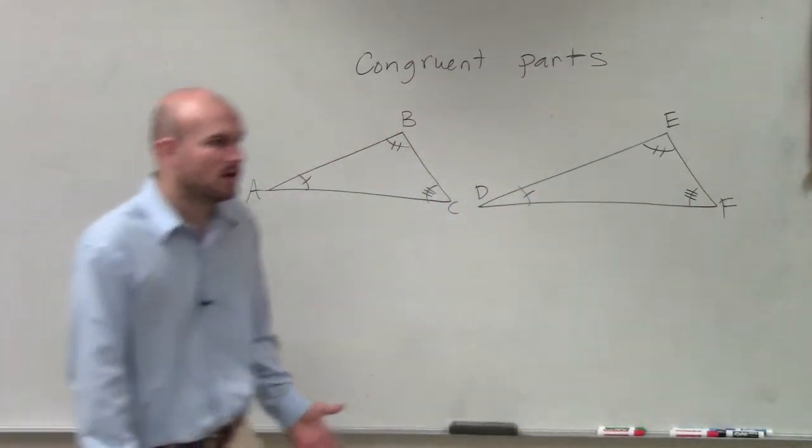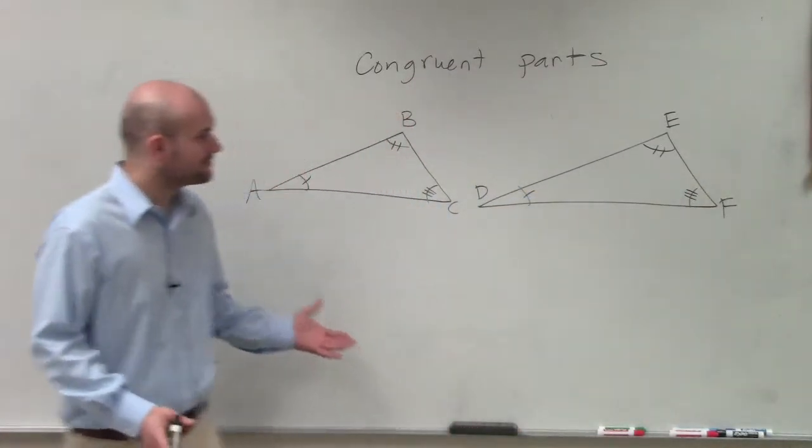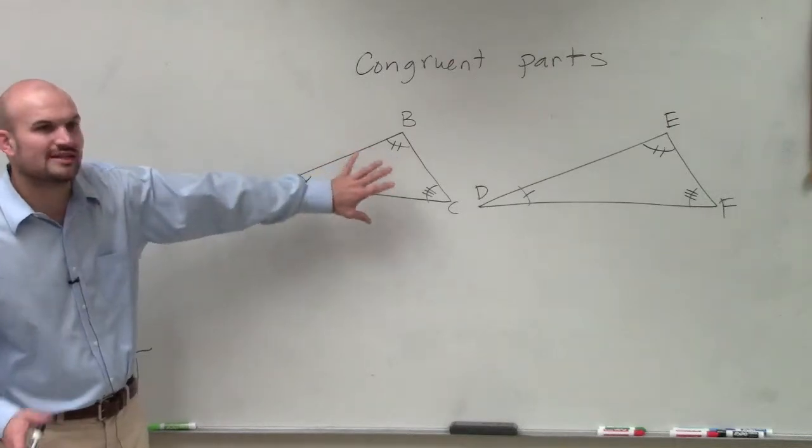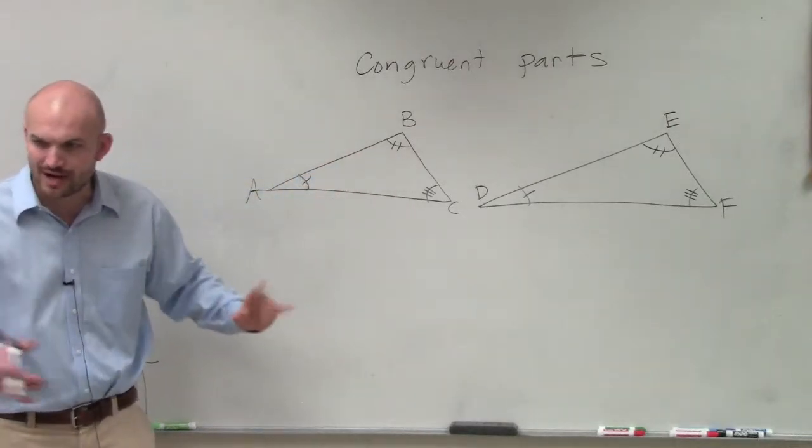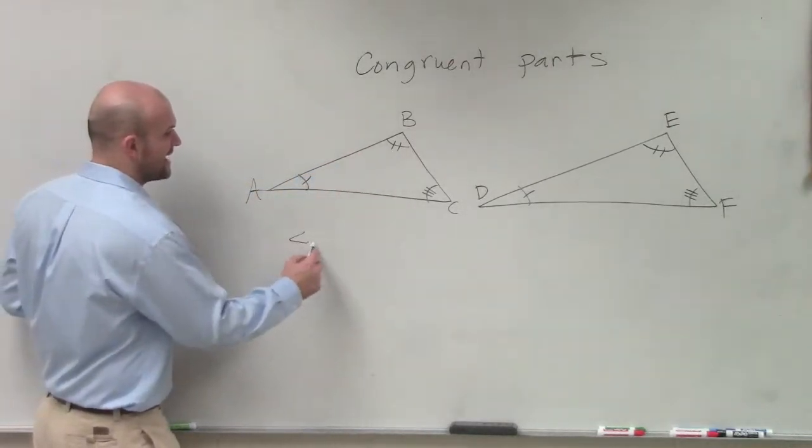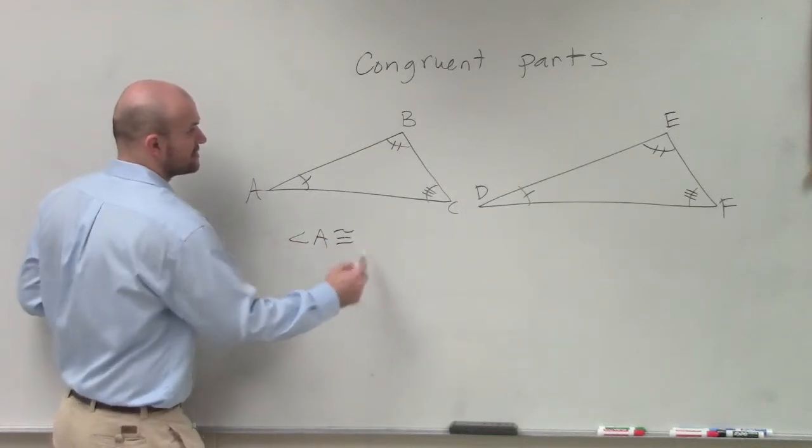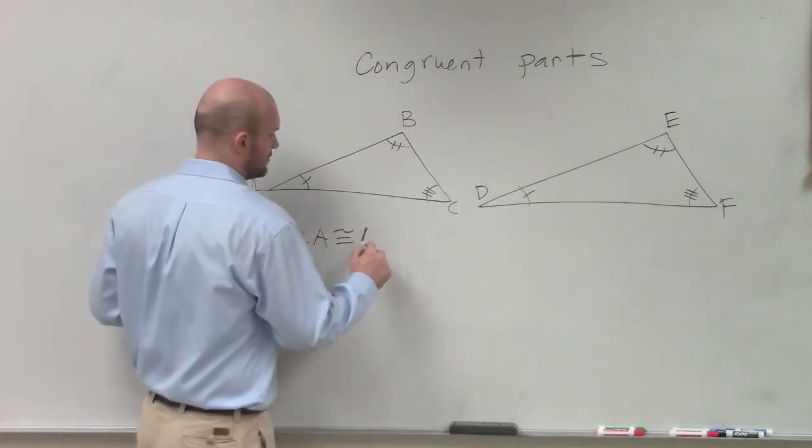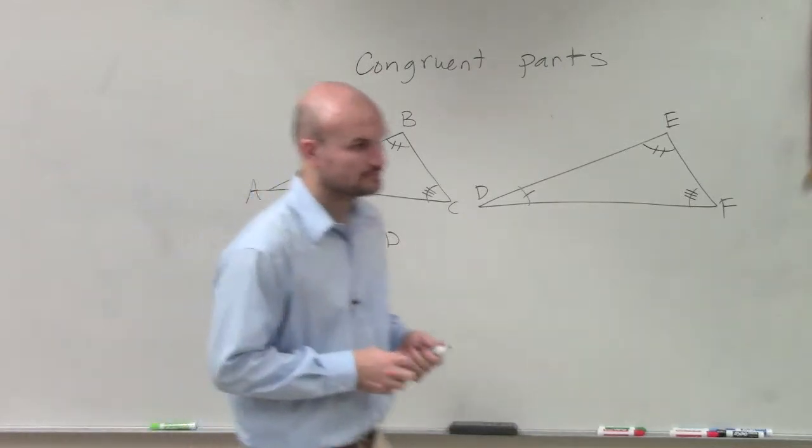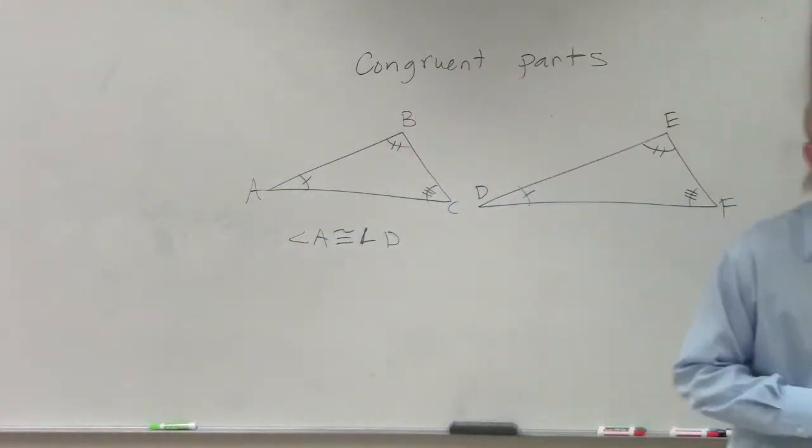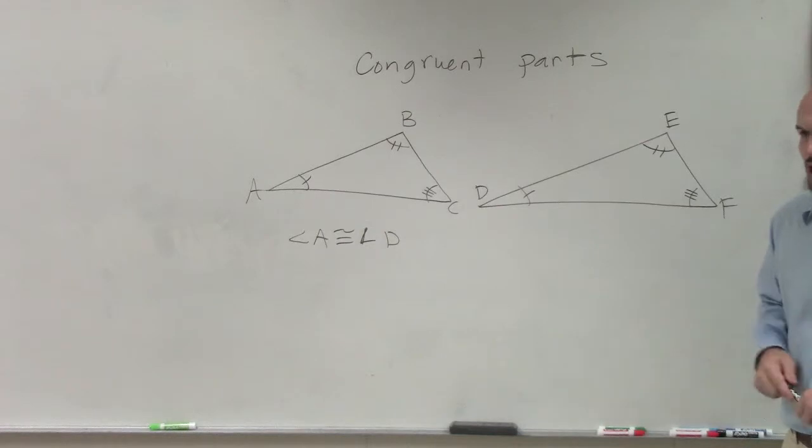So if we're saying congruent parts, notice that you guys can see that these angles are in the exact same location of their triangle. Therefore, we can say that angle A is congruent to angle D, right? Those are congruent parts.